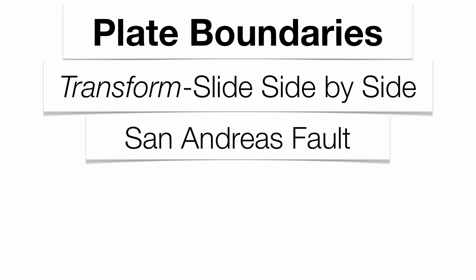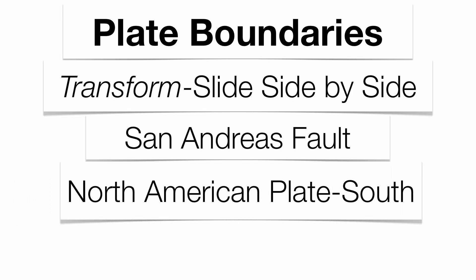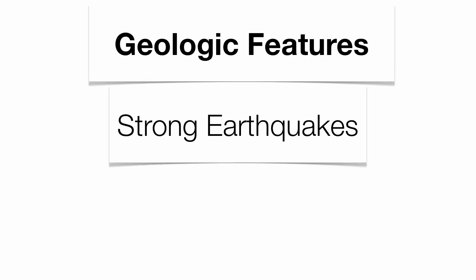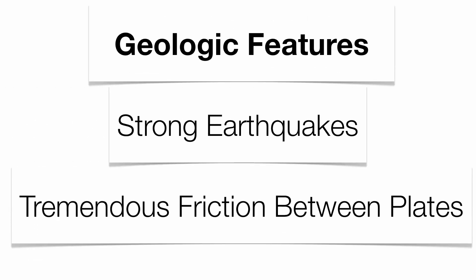The San Andreas Fault is going to be the boundary between the North American plate traveling south and the Pacific plate traveling north. You tend to get extremely strong earthquakes at this type of plate boundary because you have tremendous friction between the two plates grinding against each other, traveling in opposite directions.